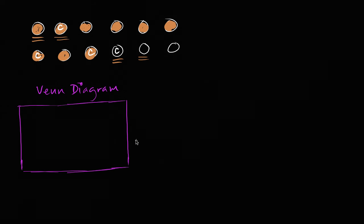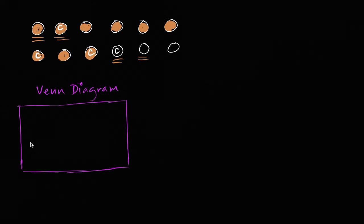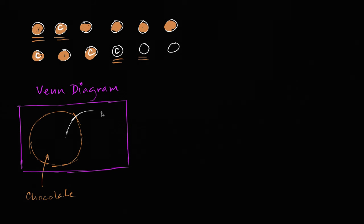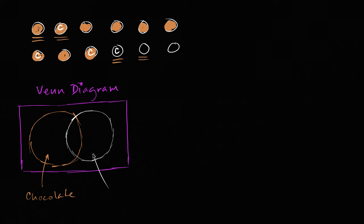Then I'll draw circles to represent the sets that I care about. For this one, I care about the set of things that have chocolate, so I'll draw that with a circle. That is my chocolate set. And then I'll have a coconut set. Not drawn to scale — I draw them roughly the same size, but you can see the chocolate set is bigger than the coconut set in reality.